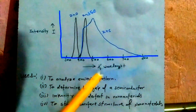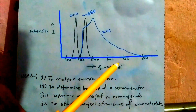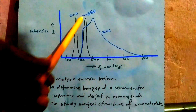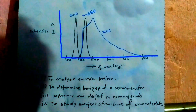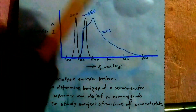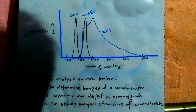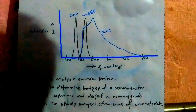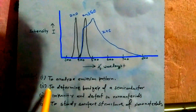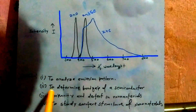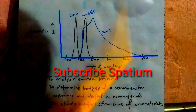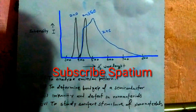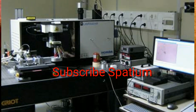This is the graph of photoluminescence analyzed for zinc oxide, ZnS, and ZnSSe — there are many samples that can be characterized using photoluminescence. We can measure the band gap, analyze the emission spectrum from nanomaterials, determine the band gap of semiconductors, identify impurities and defects in nanomaterials, and study the surface structure of nanomaterials. These are the many applications of the photoluminescence technique to characterize nanomaterials.